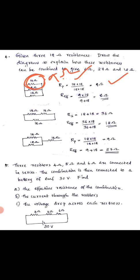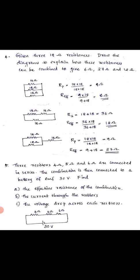This 9 ohm is then combined in parallel with the remaining 18 ohm. Substituting: 9 into 18 divided by 9 plus 18. The answer is 6 ohm. So the effective resistance of this combination is 6 ohm.